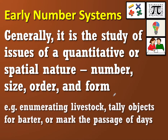One of the earliest forms of mathematics is enumerating livestock — counting the number of sheep, chickens, goats, or cows. We also use mathematics when tallying objects for barter, or when marking the passage of days using sticks and pebbles.